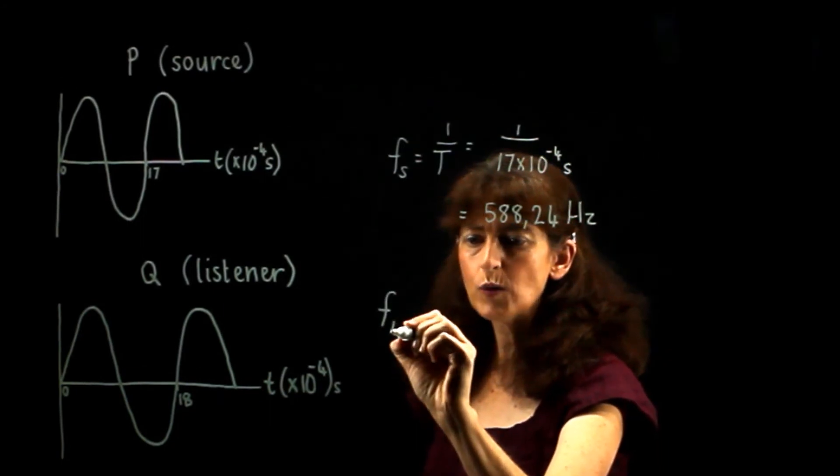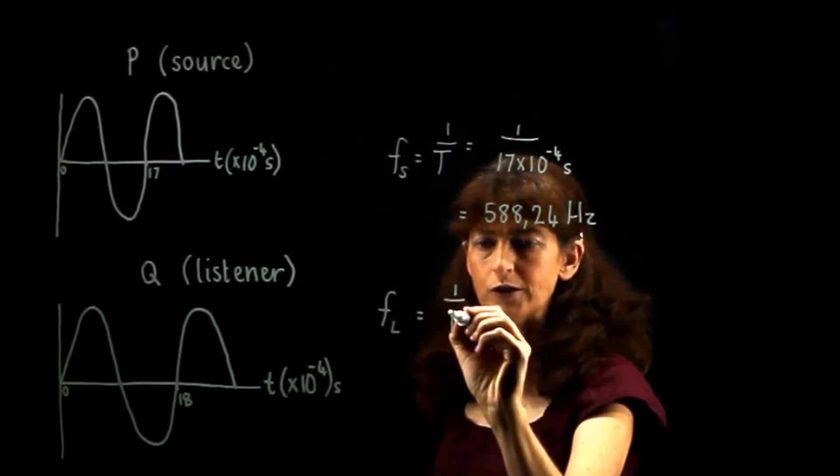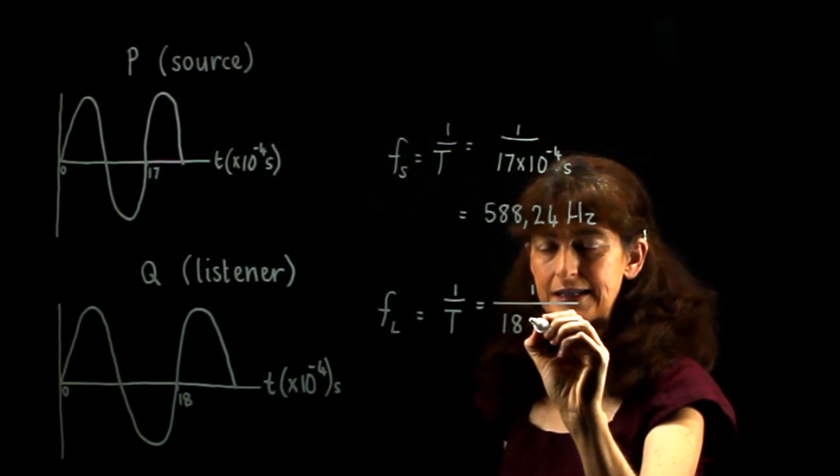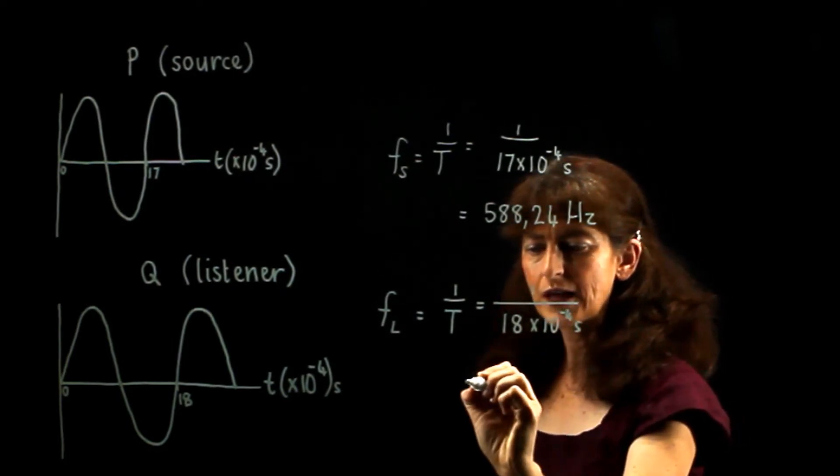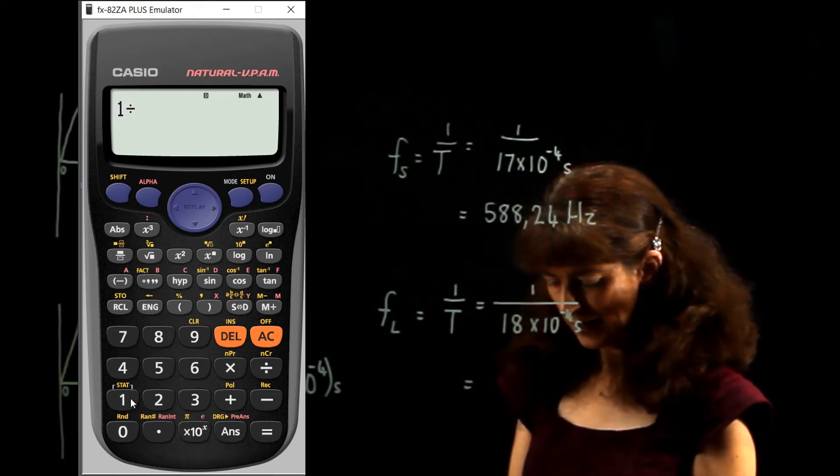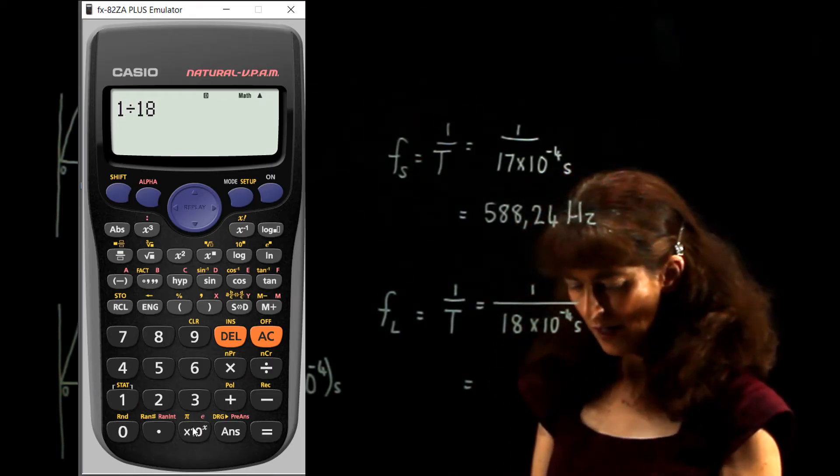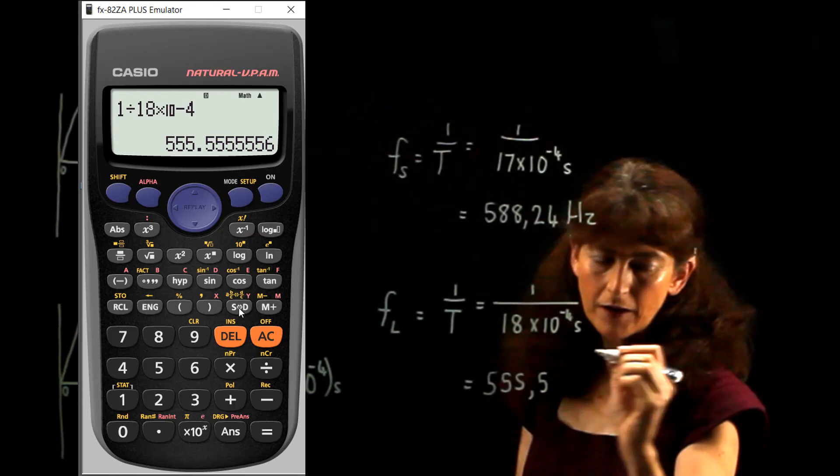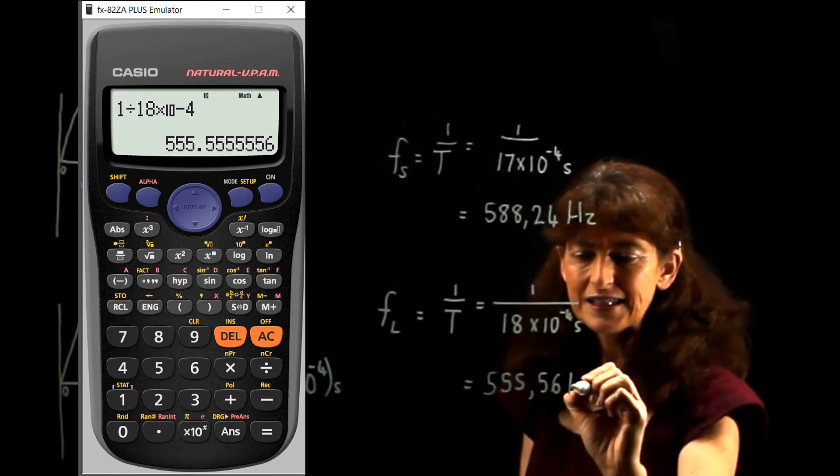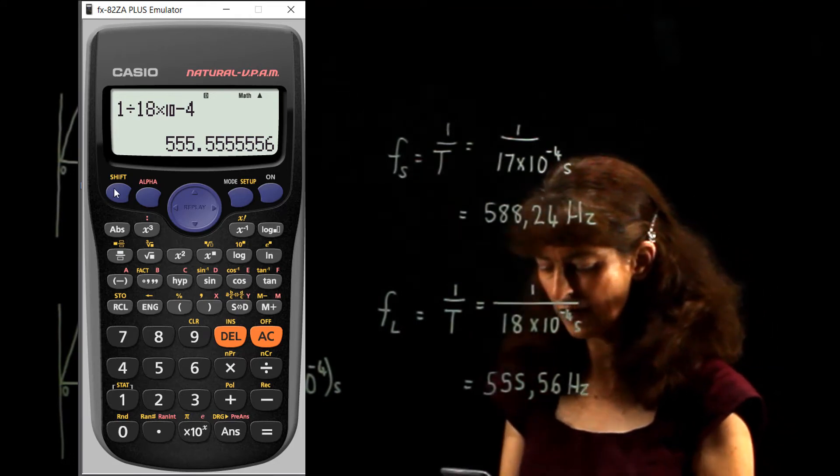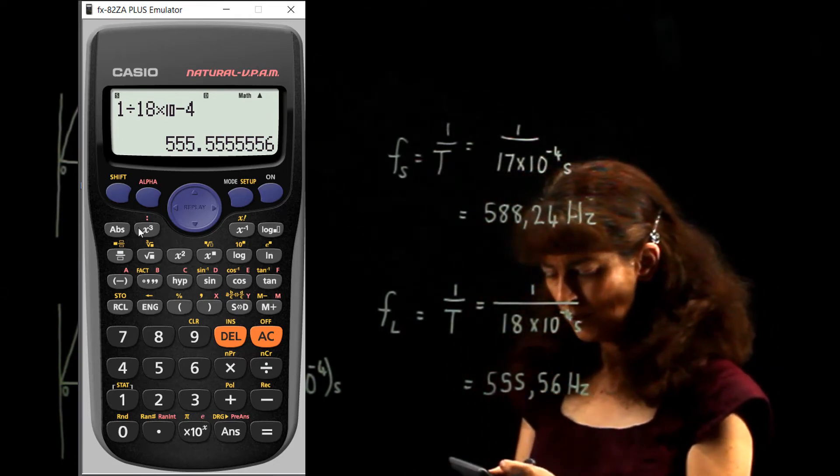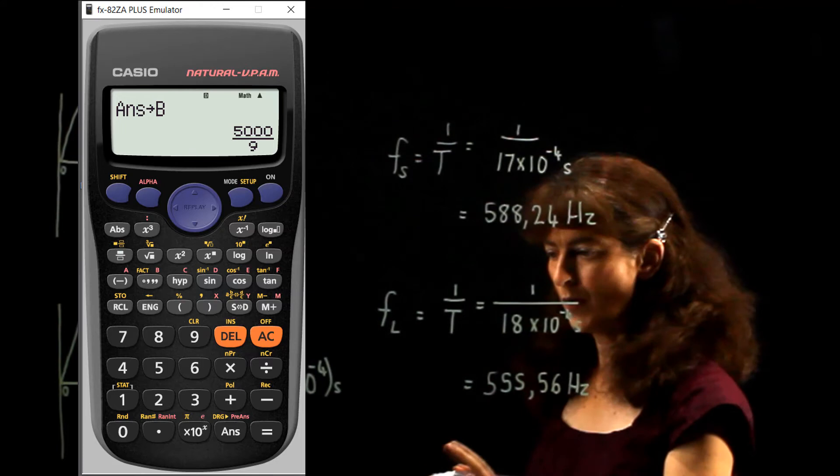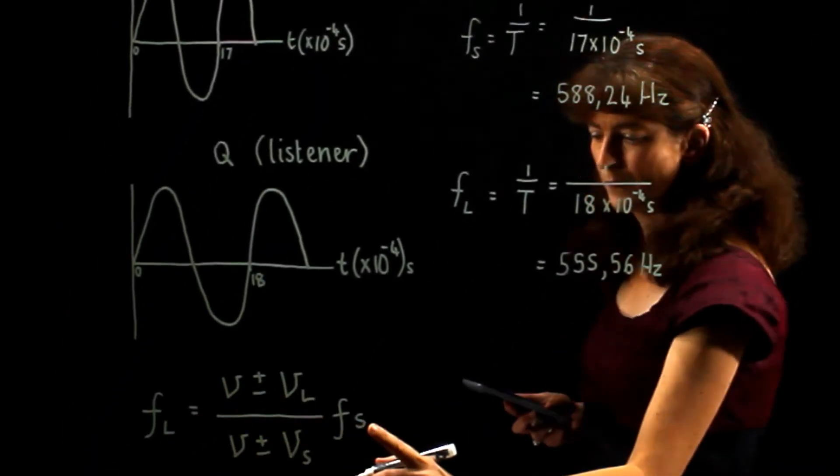The first step is to find the frequency of the listener. Very simple. All we do is we get the inverse of the period, which we've already said is 18 times 10 to the power minus 4 seconds. We do that on our calculator: 1 divide by 18 times 10 to the power minus 4. We find it to be 555.56. Let's put that also into a memory, into memory B, shift store B. So we have both of these stored now in our memory because we know that we're going to use both of them.